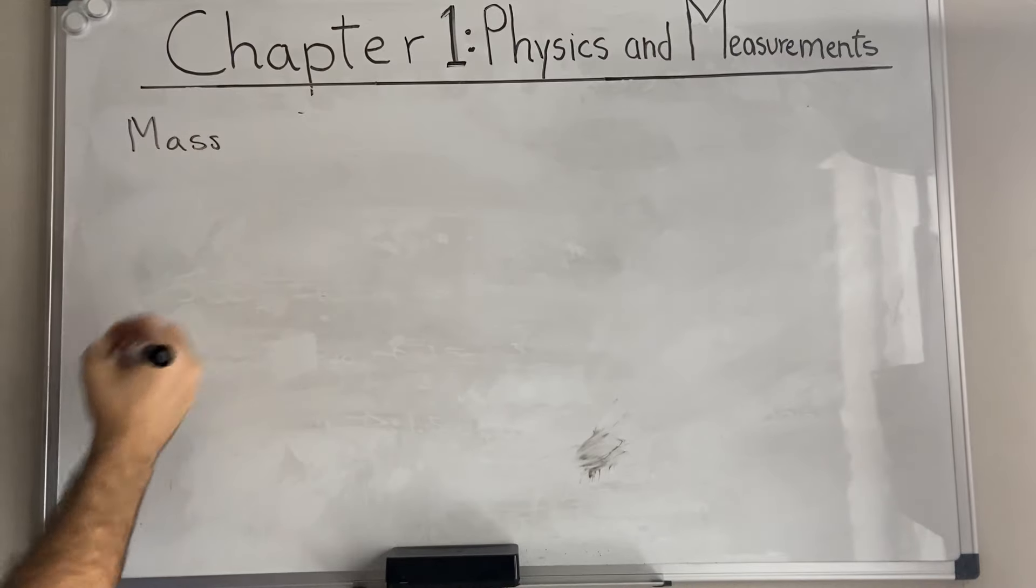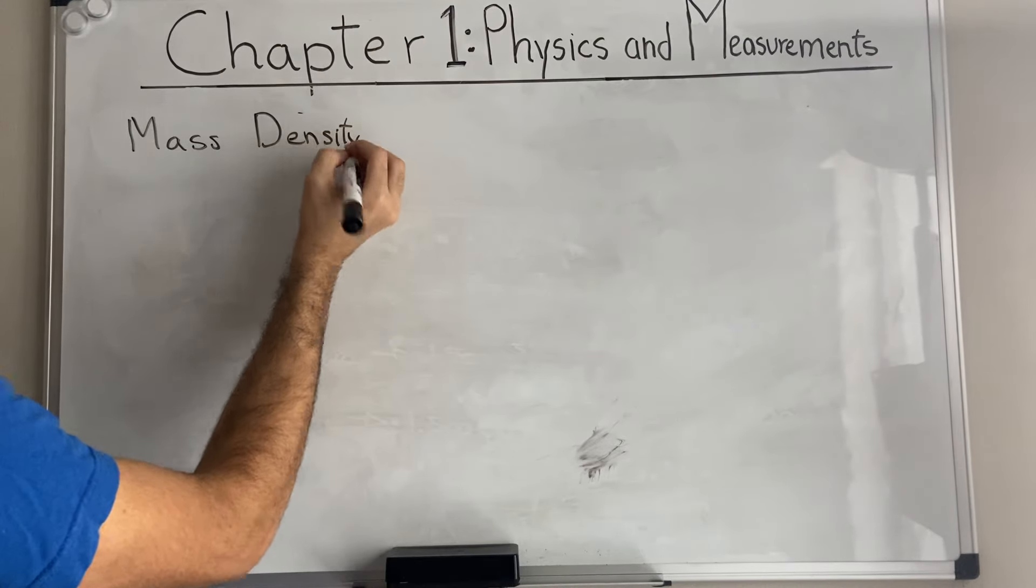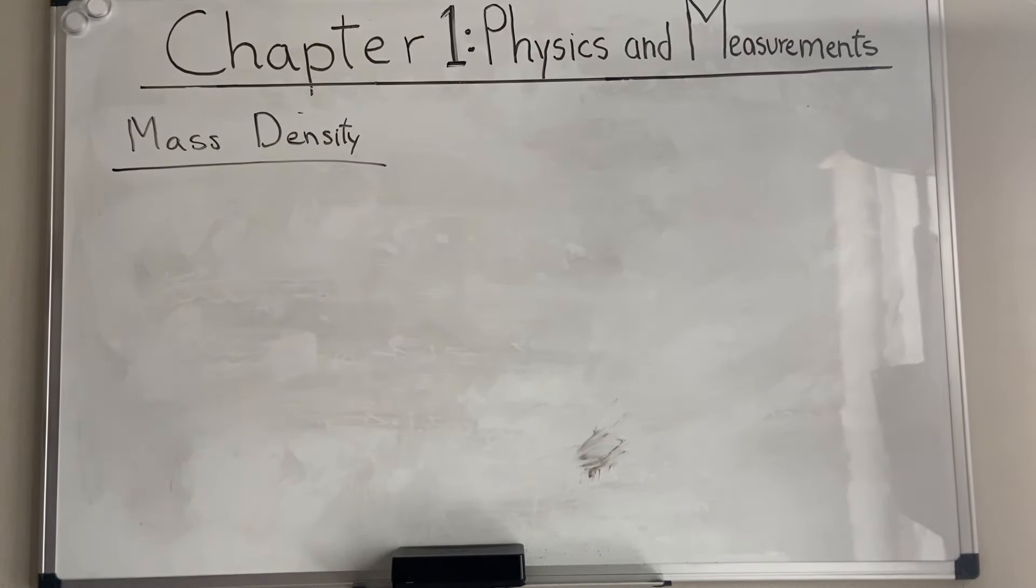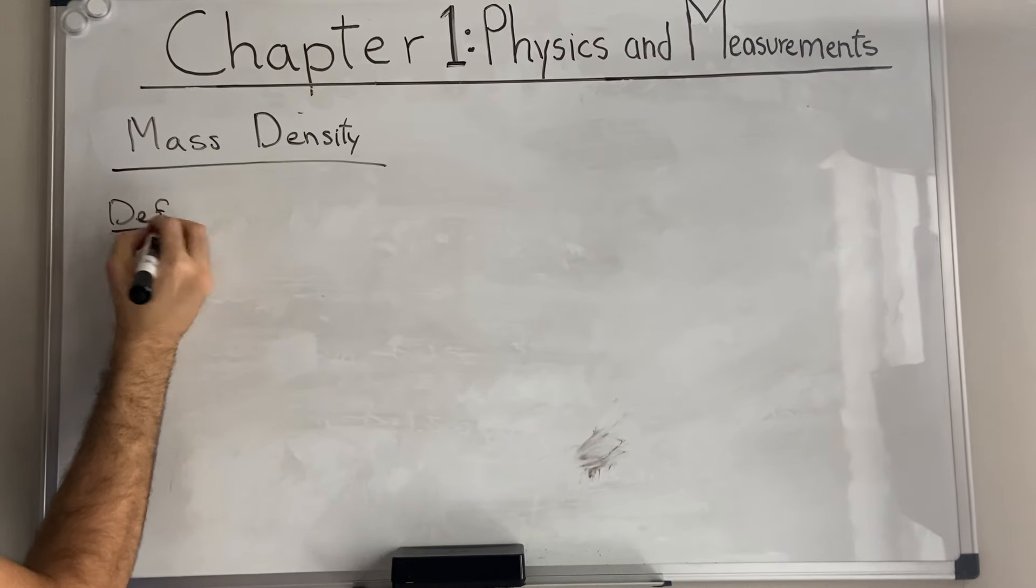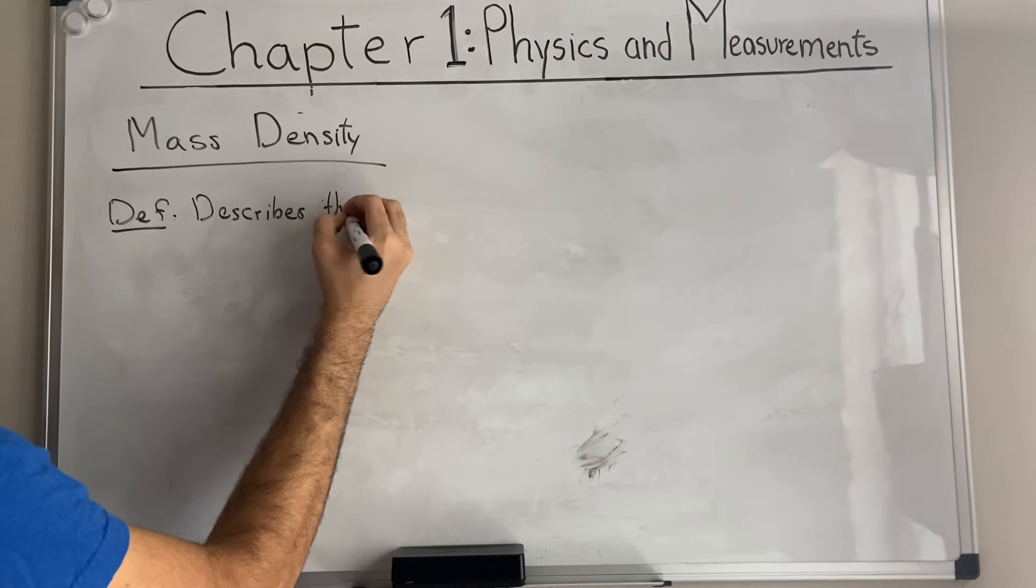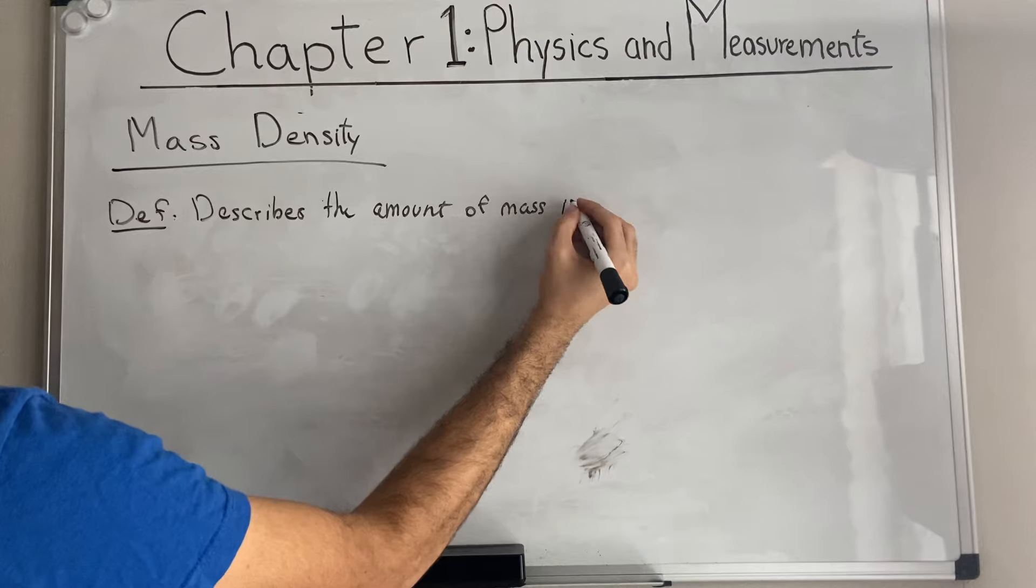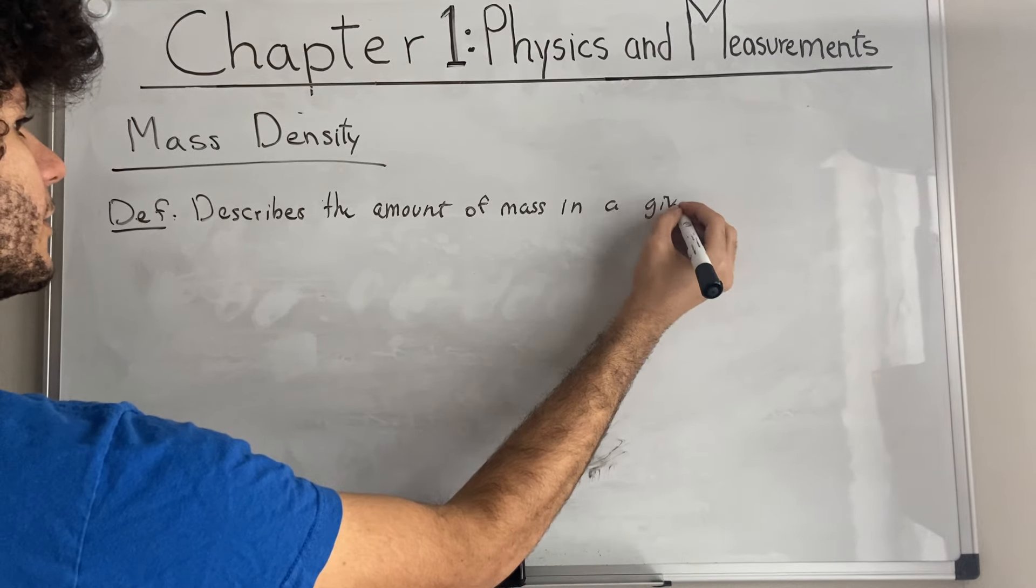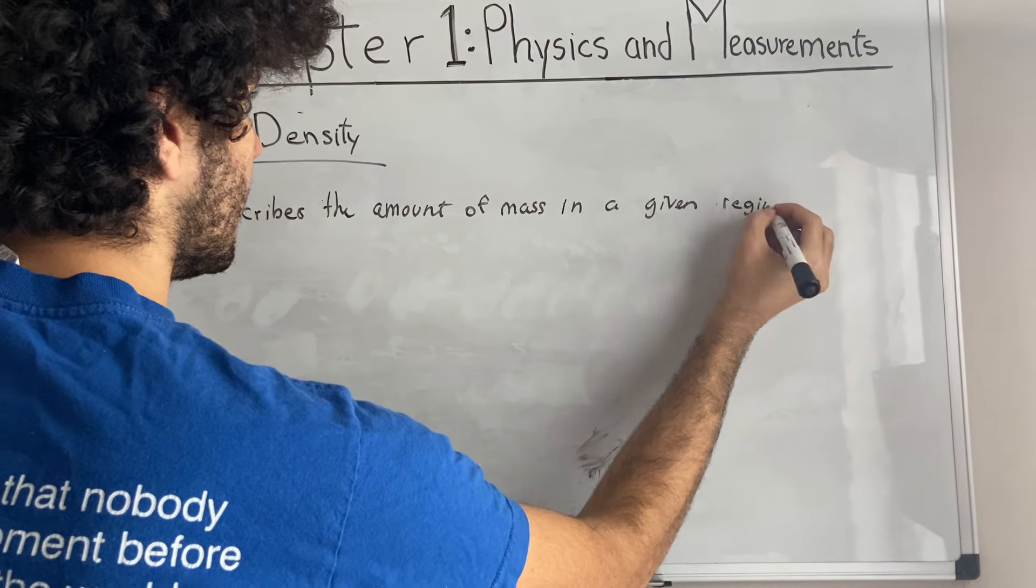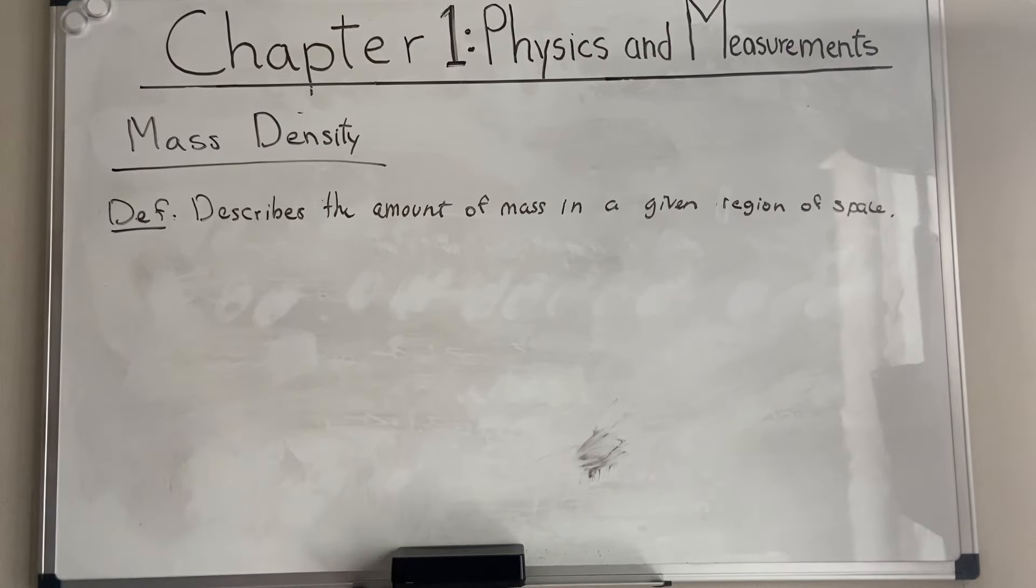One final thing that we're going to go over in chapter one is mass density. This is starting to be a topic that we will be dealing with much later in chapter 10. Mass density basically allows us to describe the amount of mass in a given region of space.